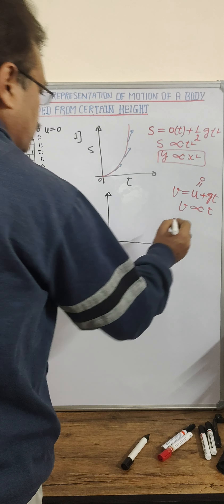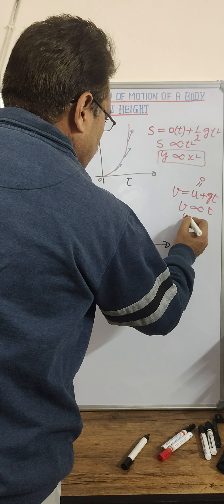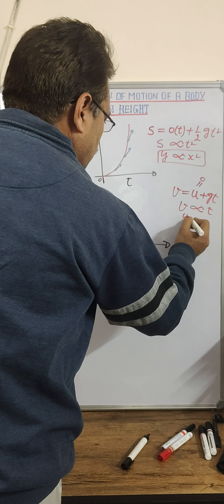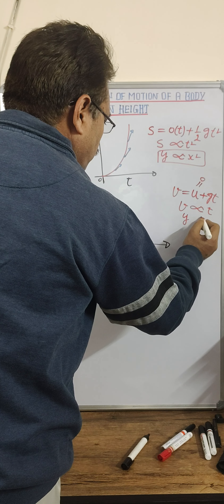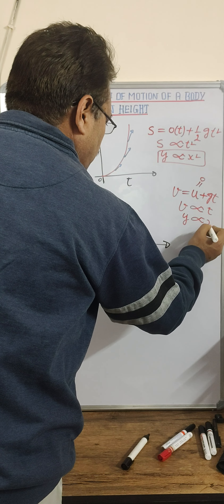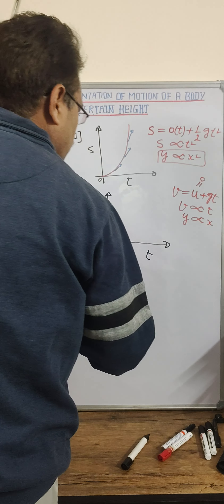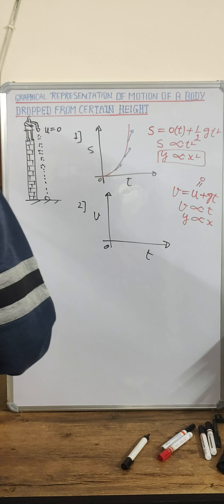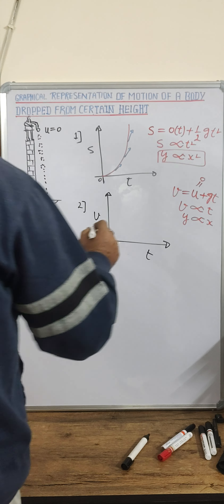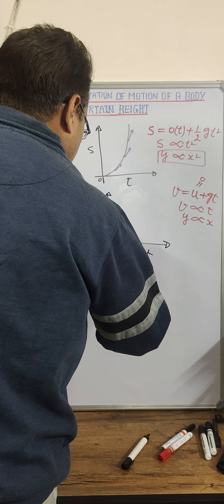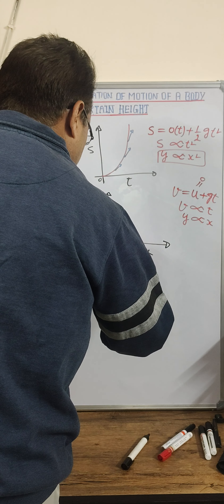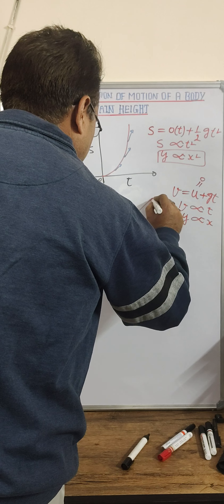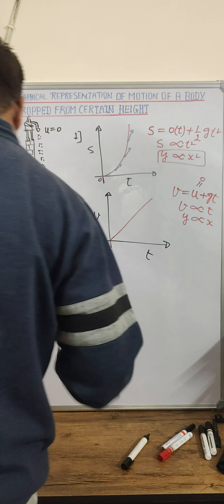Since v is proportional to t, this is a straight line graph — similar to y proportional to x. The velocity-time graph is a straight line passing through the origin, increasing as the body is dropped.